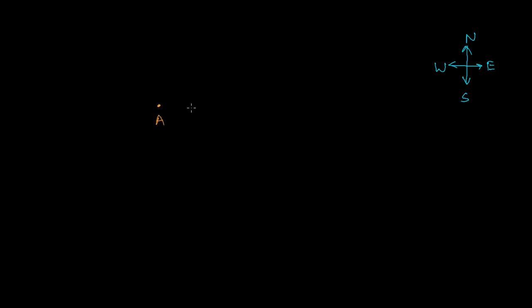Everybody knows the directions, right? This is the north direction, this is the south direction, this is the east direction, and this is the west direction. I'm talking about directions because it's a vector quantity. Let's say at a certain time at point A, a guy is standing and moves three kilometers towards the east, reaching point B. So this is the displacement vector AB, three kilometers from A to B.